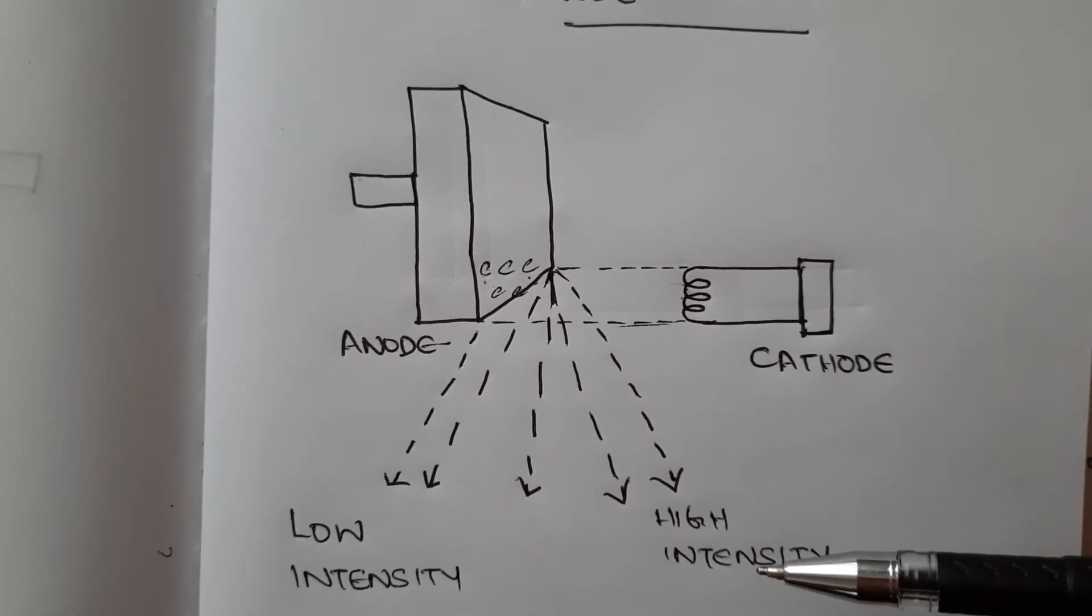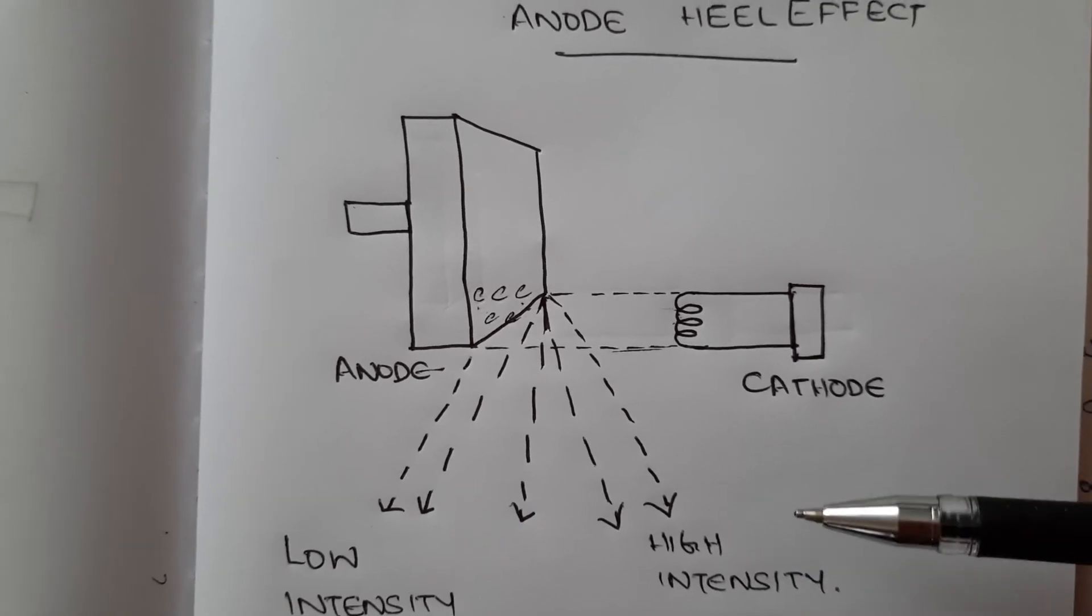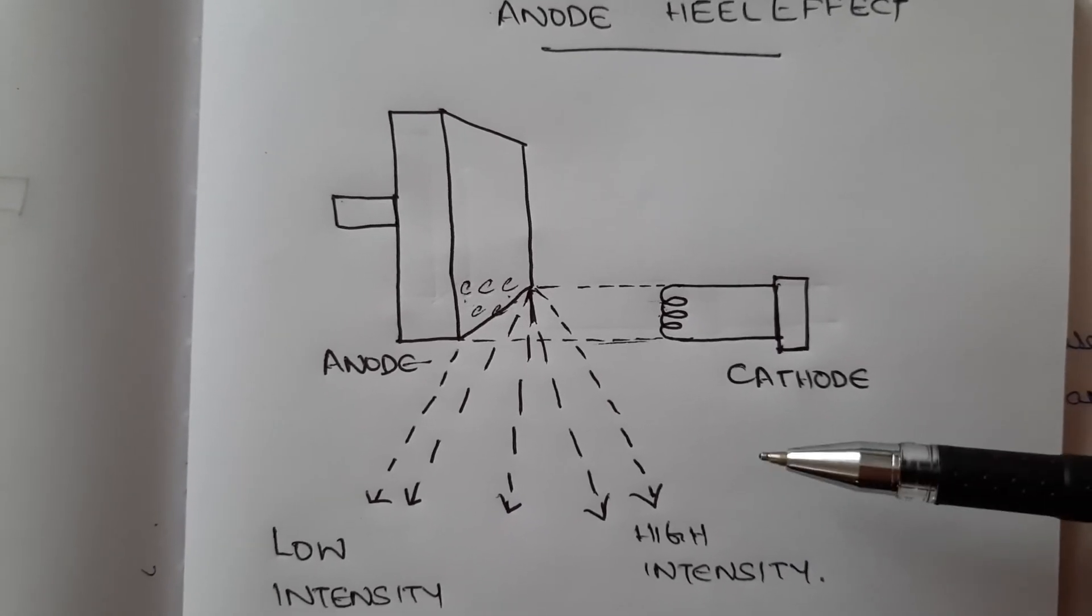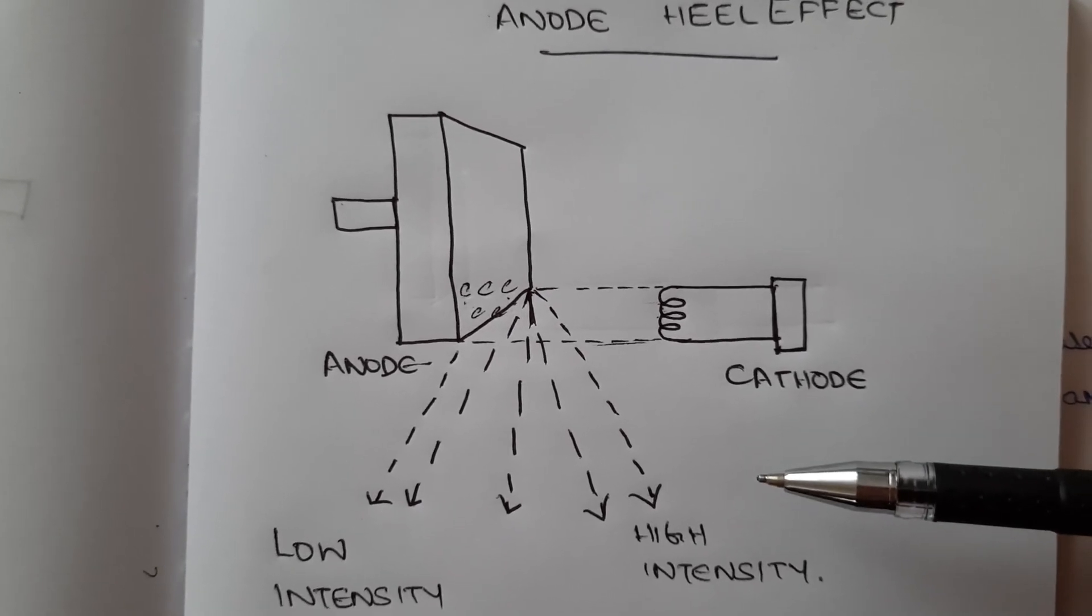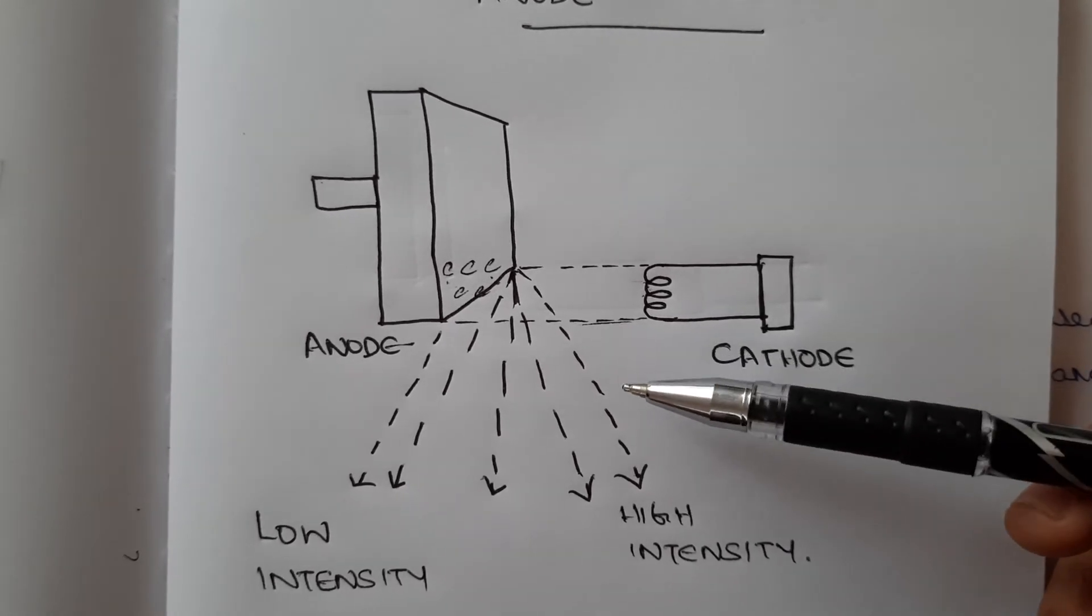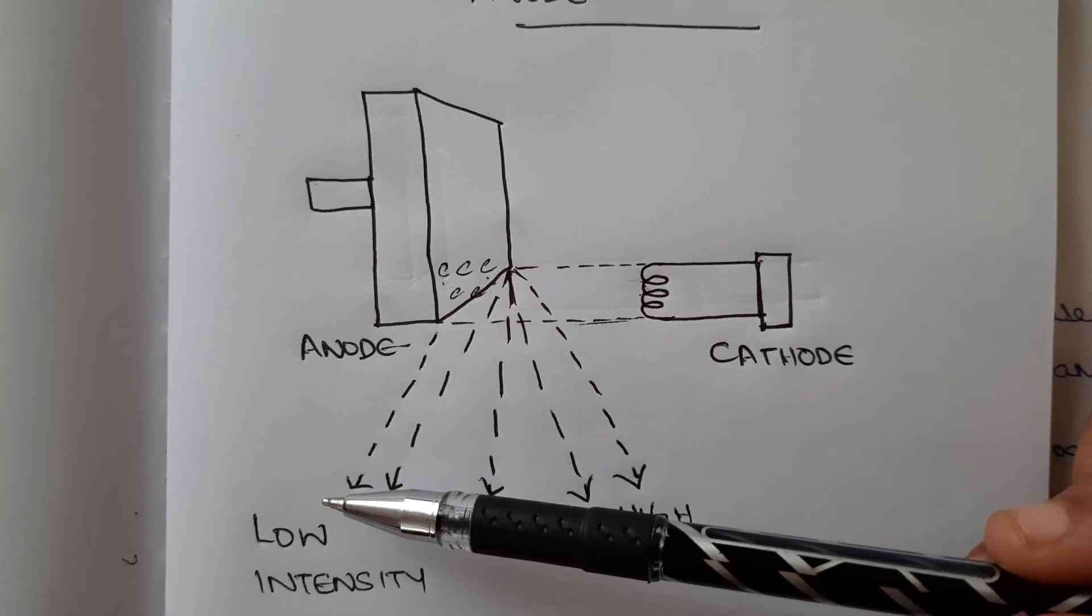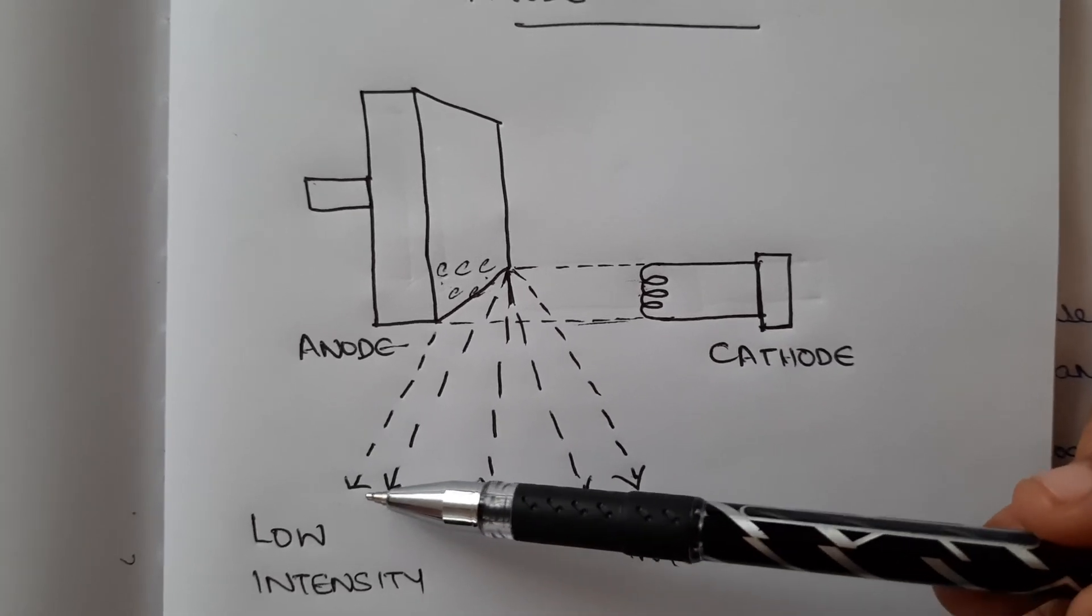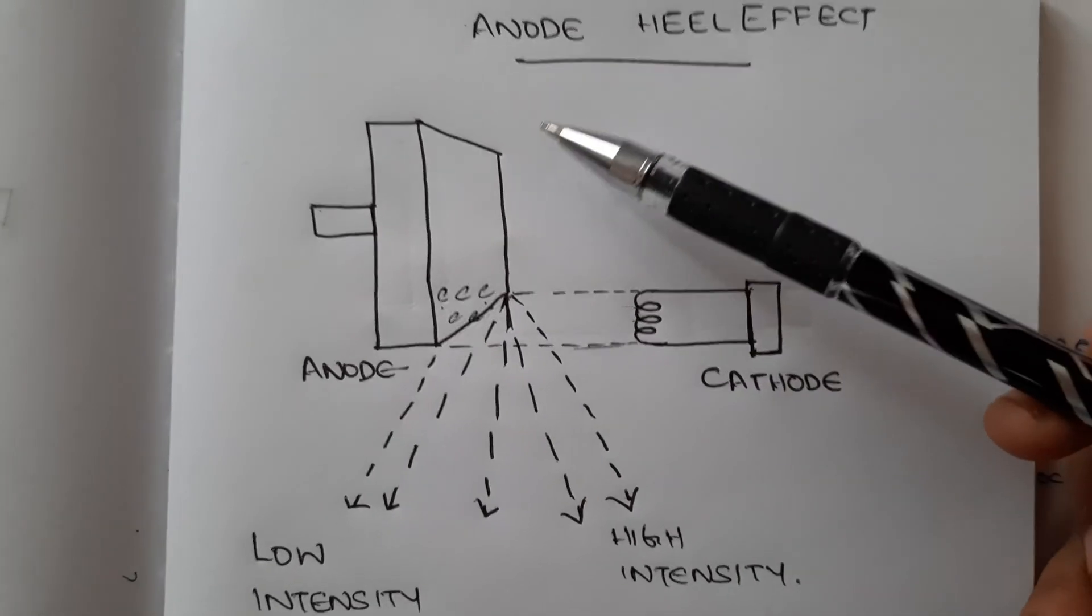Similarly, while doing x-rays of other structures, we can always position the patient so that the high density area is directed towards the cathode side and the low density area is directed towards the anode side.